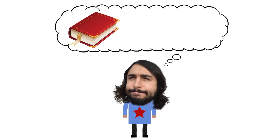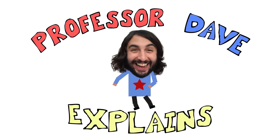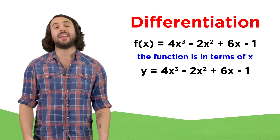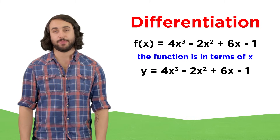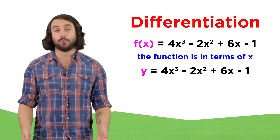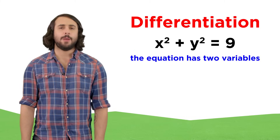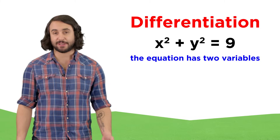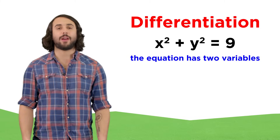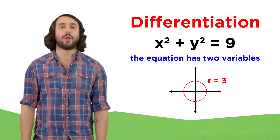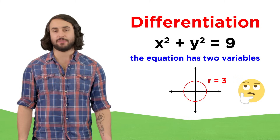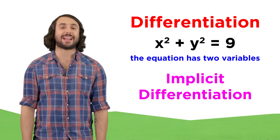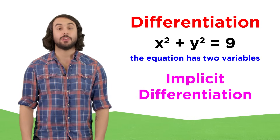It's Professor Dave, let's discuss implicit differentiation. Thus far, we have been applying differentiation to functions where one variable is being expressed in terms of another. In these, f of x is interchangeable with y, and some x terms will follow. But there are plenty of other functions that aren't set up exactly like this. For example, x squared plus y squared equals nine is the equation of a circle with its center at the origin and a radius of three. How would we take the derivative of this? In order to do it, we need to use a technique called implicit differentiation, so let's learn this now.